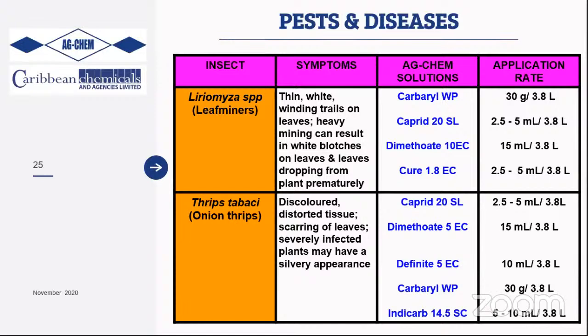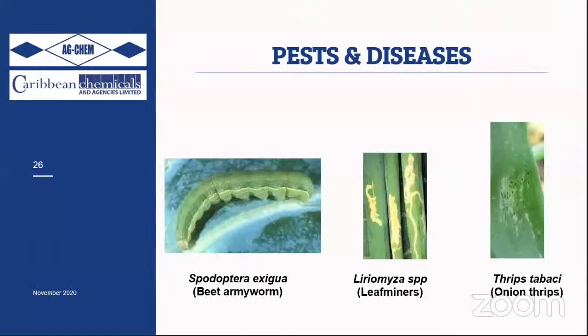Solutions for thrips control include Cyprid, Diafenthiuron, Carbaryl, and Indoxacarb. Always include appropriate adjuvants — Exit, Breakthrough, Newfenty, or spreader-sticker — in the application program for onion, which has a waxy leaf surface.